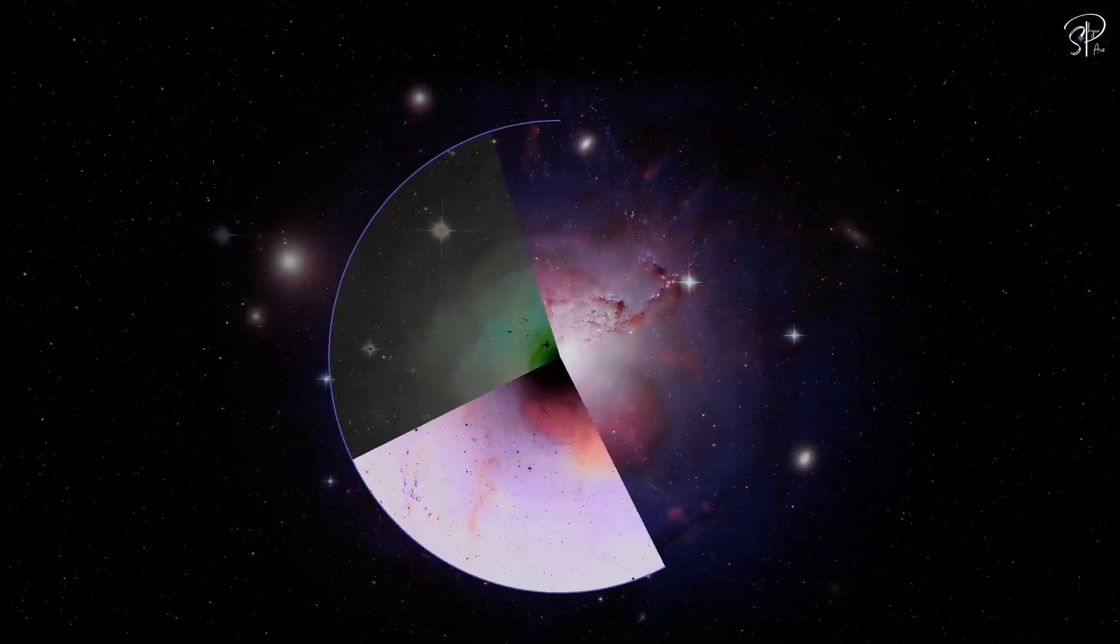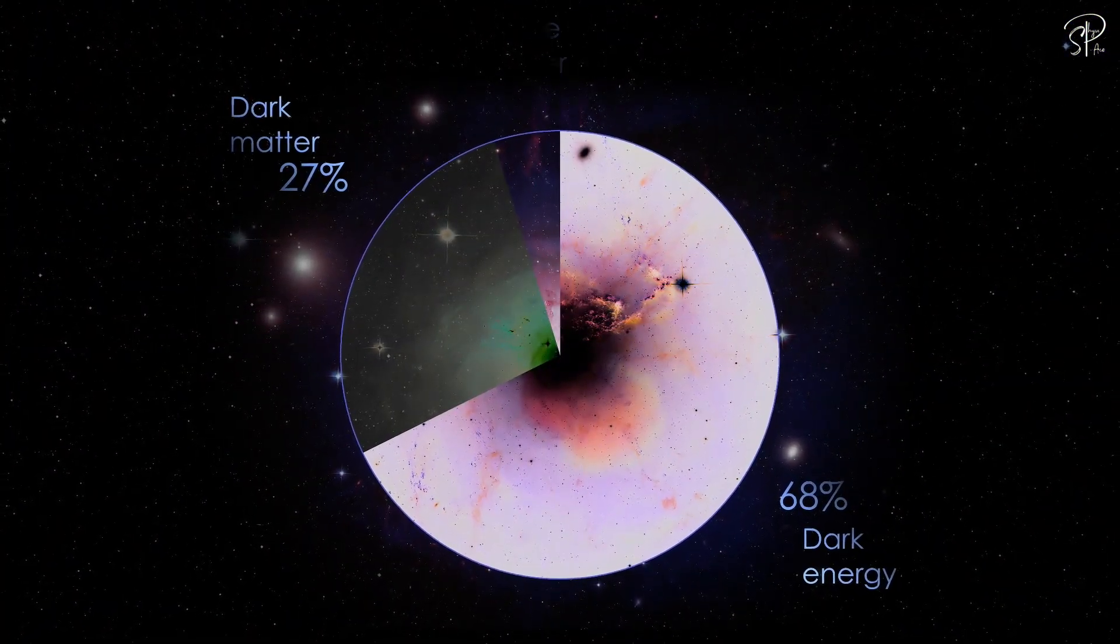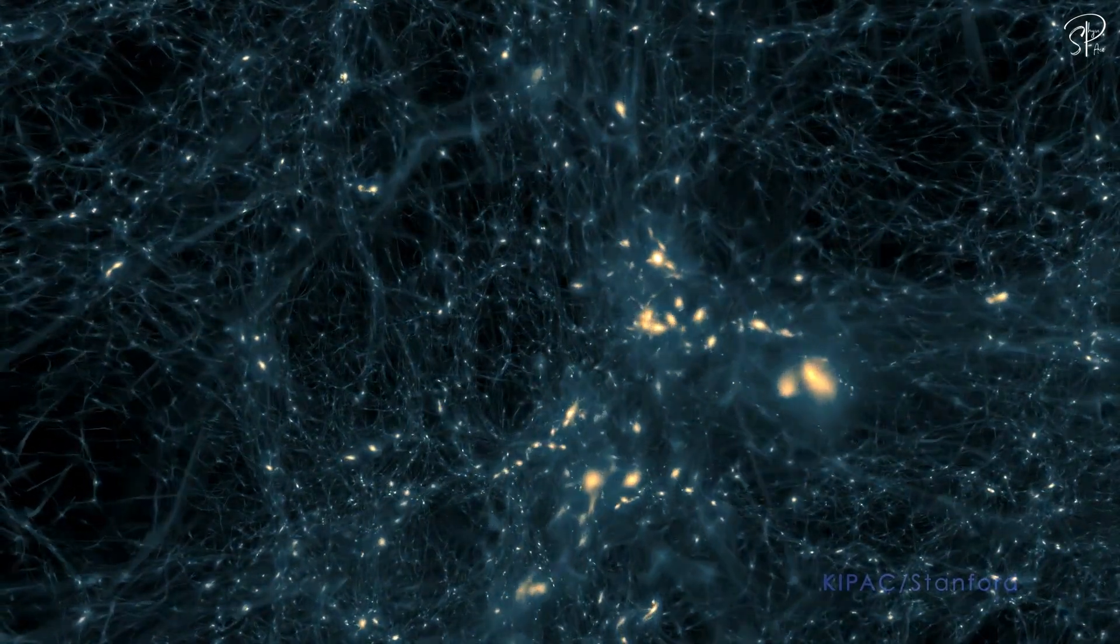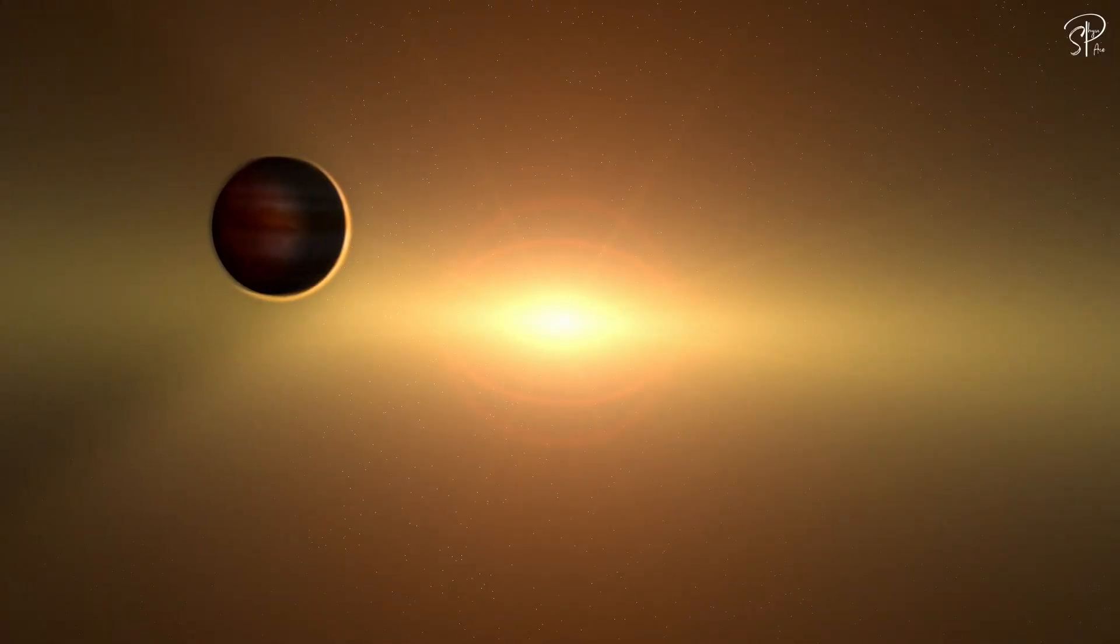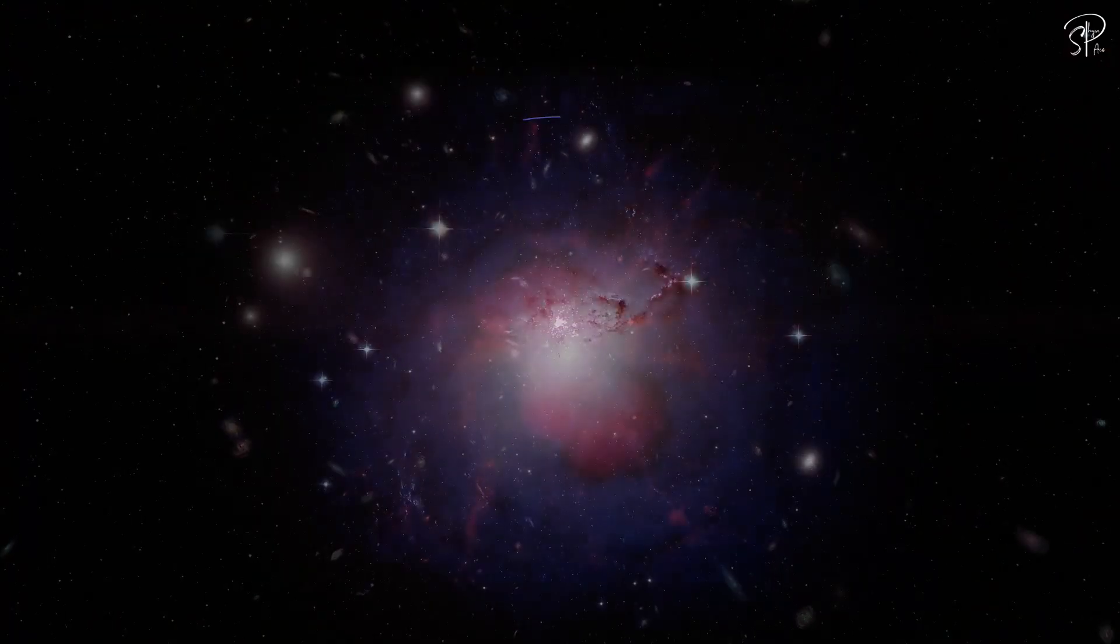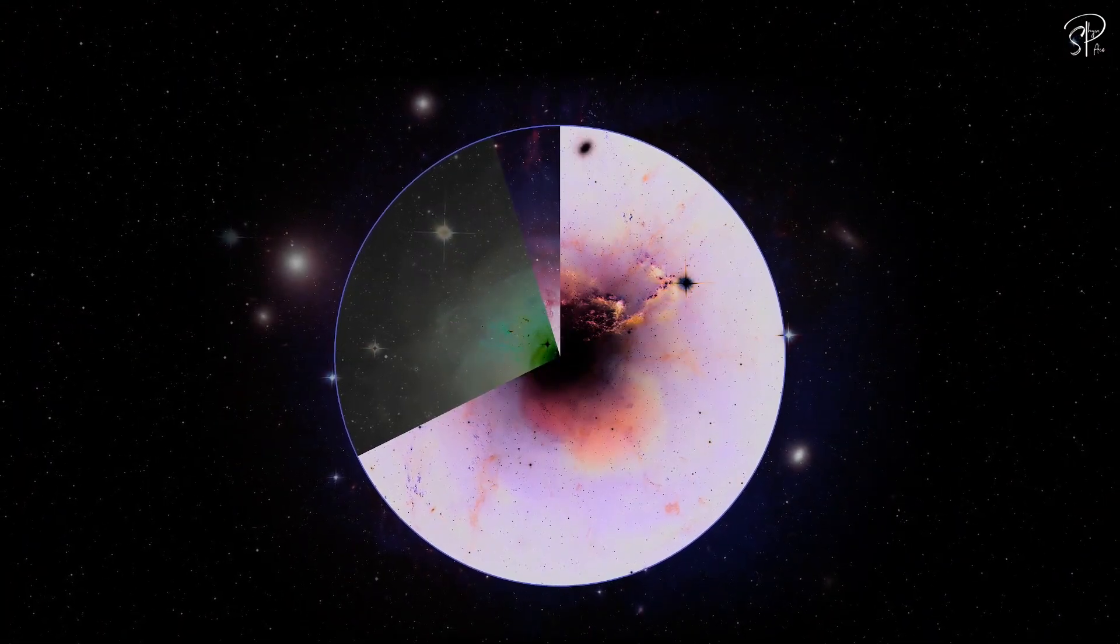But here's the kicker. General relativity also tells us there is more mass in galaxy, galaxy clusters and the universe as a whole than what we can see and receive light from. Even if we account all the things that doesn't give their own light like planets, black holes and dust, it's still not enough to explain this missing mass.